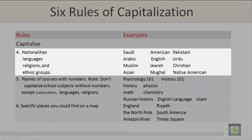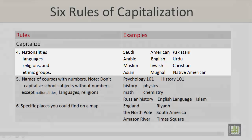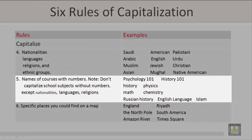Rule number four: nationalities, languages, religions, and ethnic groups. For example: Saudi, Arabic, Muslim, Asian, American, English, Mughal, Pakistani, Urdu, Christian, and Native American.